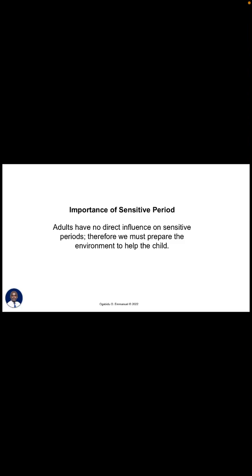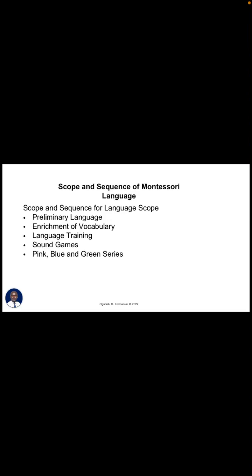Now we'll look at the scope and sequence of Montessori language. The first area is the preliminary language activities, which includes enrichment of vocabulary, language training, and sound games. Then we move on to the pink, blue, and green series.